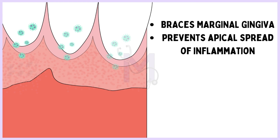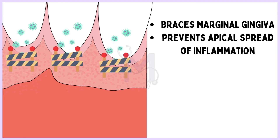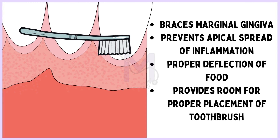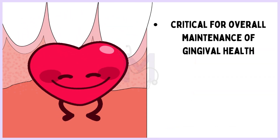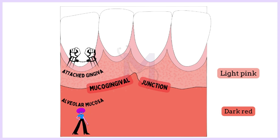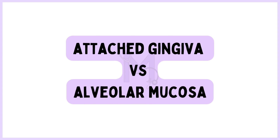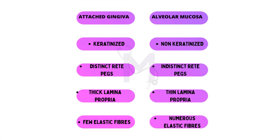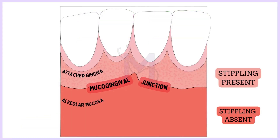The attached gingiva has some important functions. It braces the marginal gingiva, prevents apical spread of inflammation from the marginal gingiva to the deeper periodontium, allows for proper deflection of food, provides room for proper placement of the toothbrush, has aesthetic value and is critical for overall maintenance of gingival health. The mucogingival junction demarcates the light pink firmly bound attached gingiva from the dark red movable alveolar mucosa. Histologically, the attached gingiva is keratinized, has distinct rete pegs and a thick lamina propria with few elastic fibers. The alveolar mucosa, on the other hand, is non-keratinized, has indistinct rete pegs with a thin lamina propria with numerous elastic fibers. The attached gingiva is stippled while stippling is absent in the alveolar mucosa.